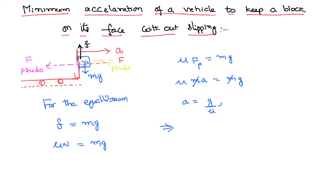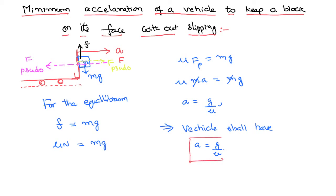This is the same acceleration that the lorry is supposed to have. The vehicle shall have acceleration a = g/μ. If the vehicle moves with this much acceleration, we can imagine the same pseudo-force which will compensate the real force, so the frame effectively becomes inertial. Therefore the frictional force can compensate the weight and the block can remain in a state of rest. So the vehicle — lorry, bus, or car — shall move with this acceleration a = g/μ.